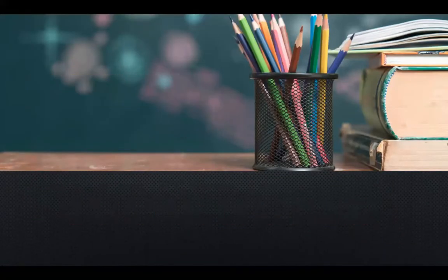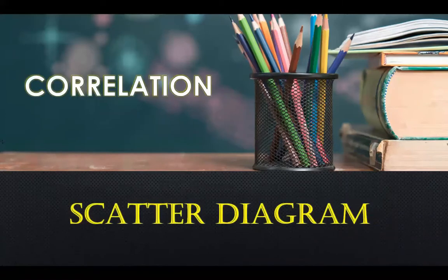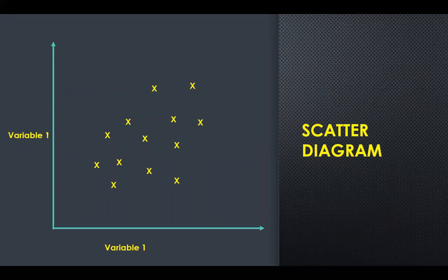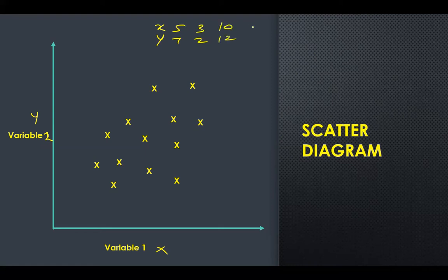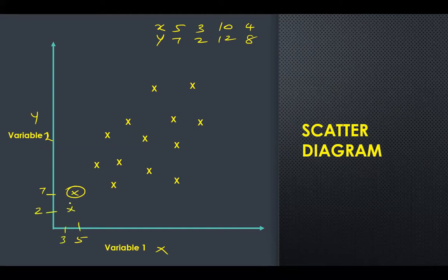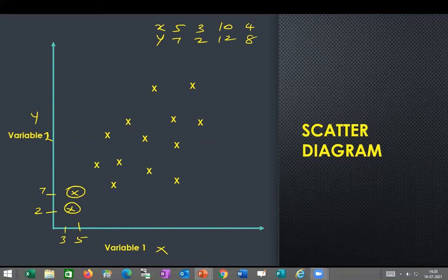For the scatter diagram, we plot variable x on one axis and variable y on the other axis. For example, if x and y values are given as 5, 7, 3, 2, 10, 12, 4, 8 — we mark each pair of values as a point on the graph. So the point (5, 7) is marked, then (3, 2), and so on. That is what a scatter diagram is.